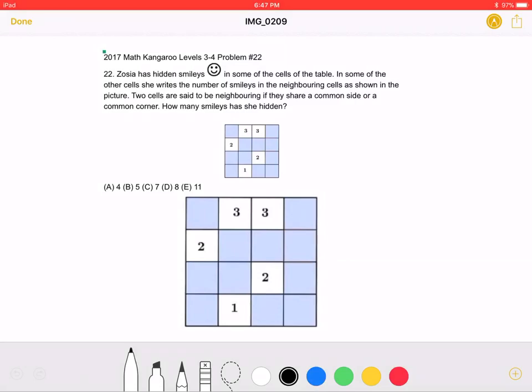Zosia has hidden smileys in some of the cells of the table. In some of the other cells, she writes the number of smileys in the neighboring cells, as shown in the picture.